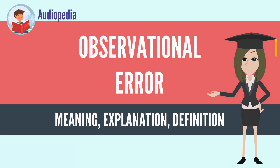Systematic errors are errors that are not determined by chance but are introduced by an inaccuracy involving either the observation or measurement process inherent to the system. Systematic error may also refer to an error with a non-zero mean, the effect of which is not reduced when observations are averaged.